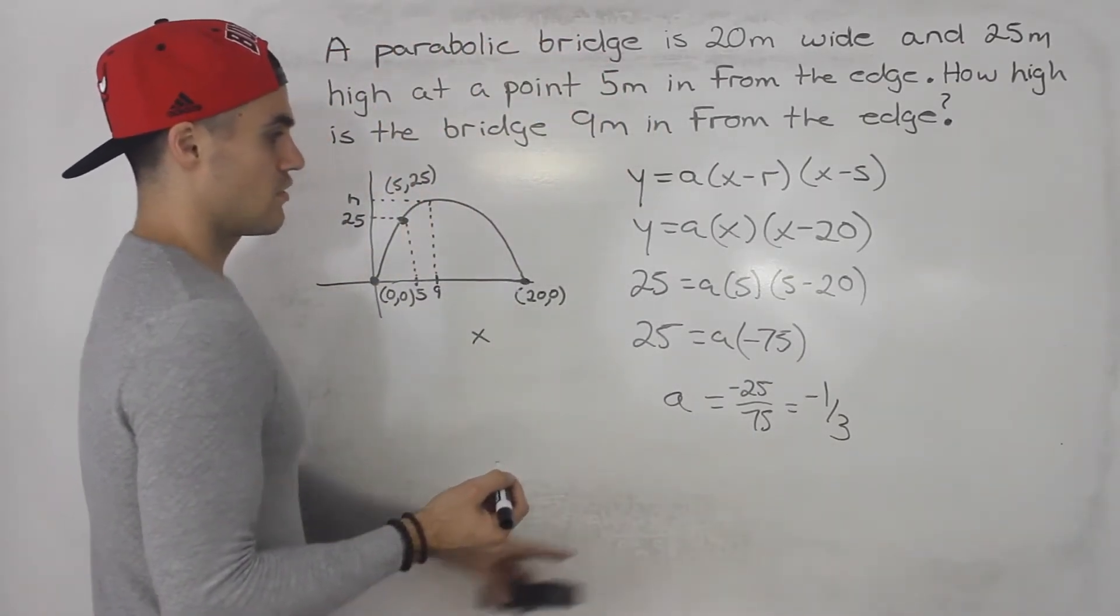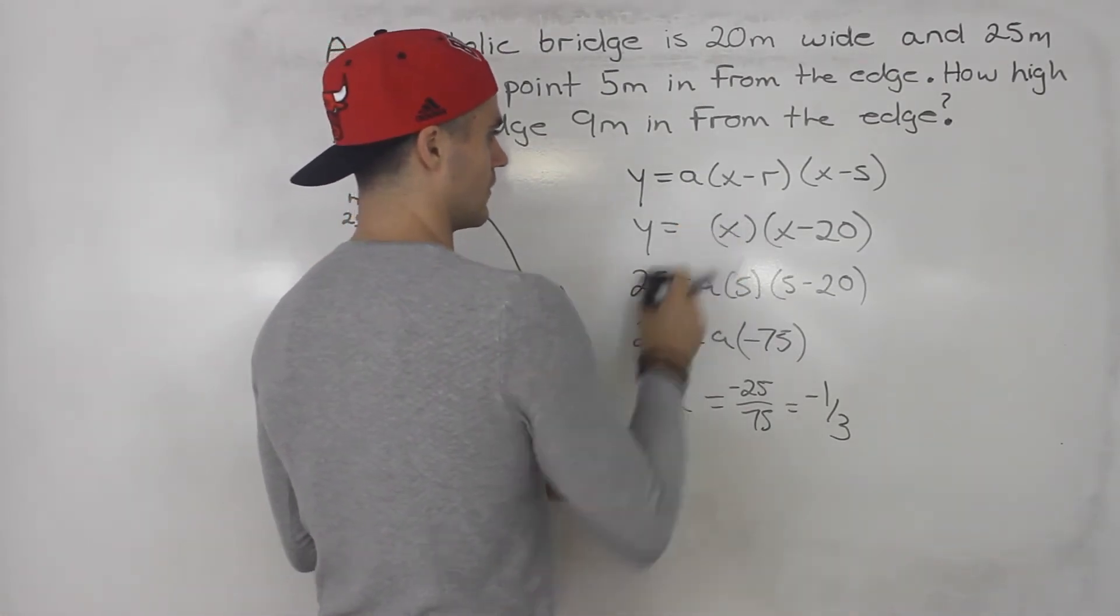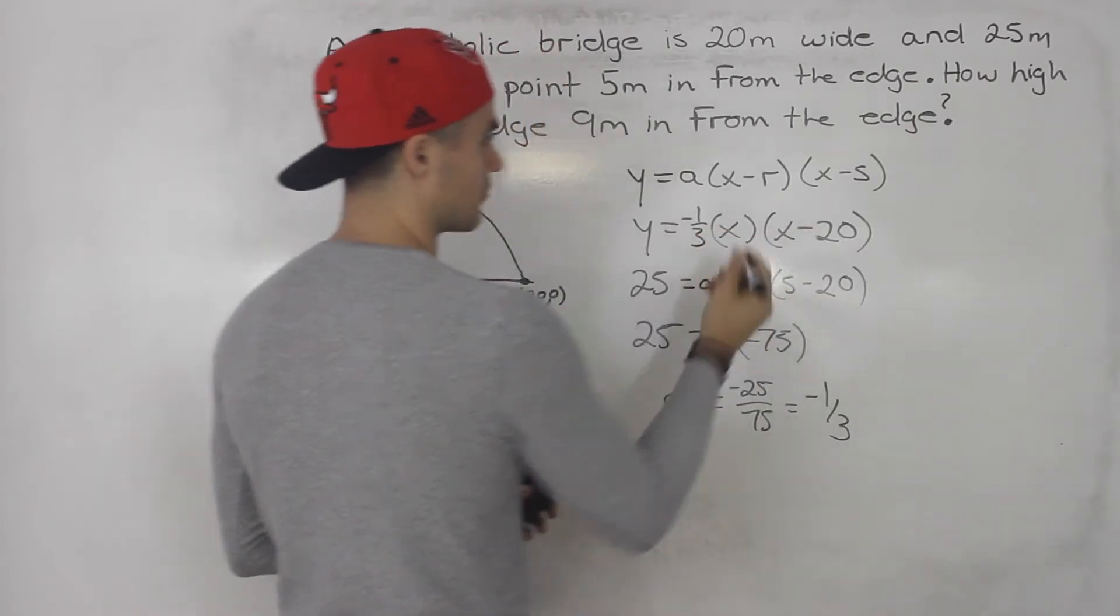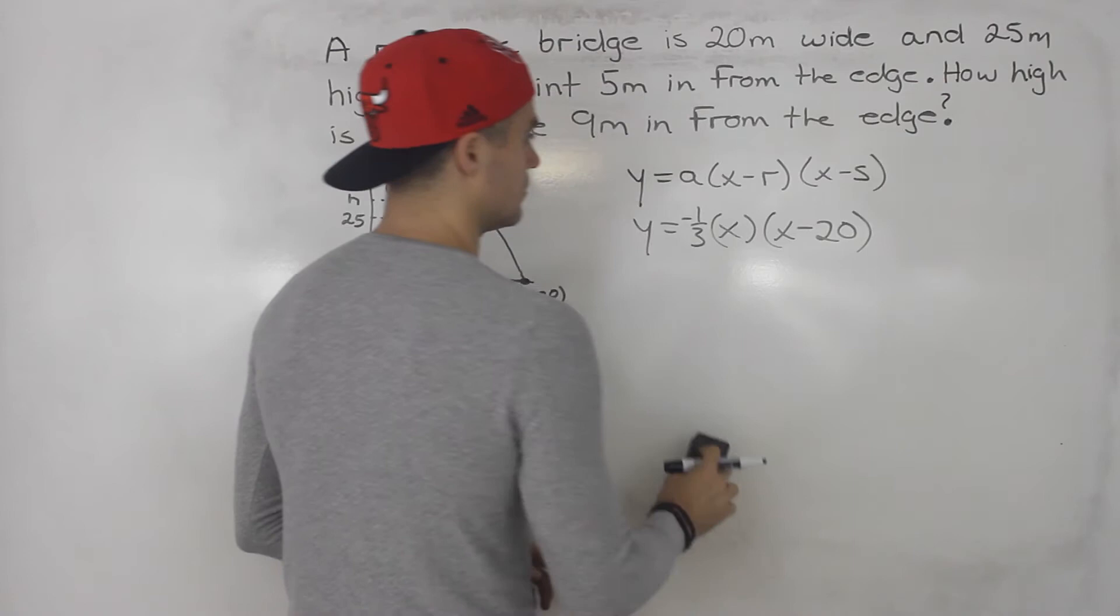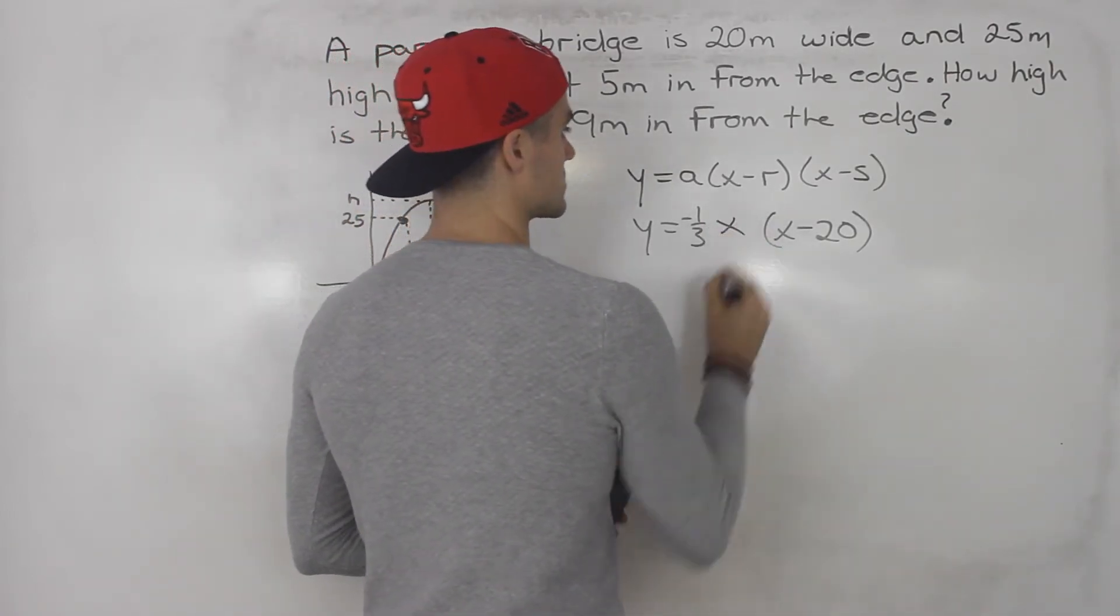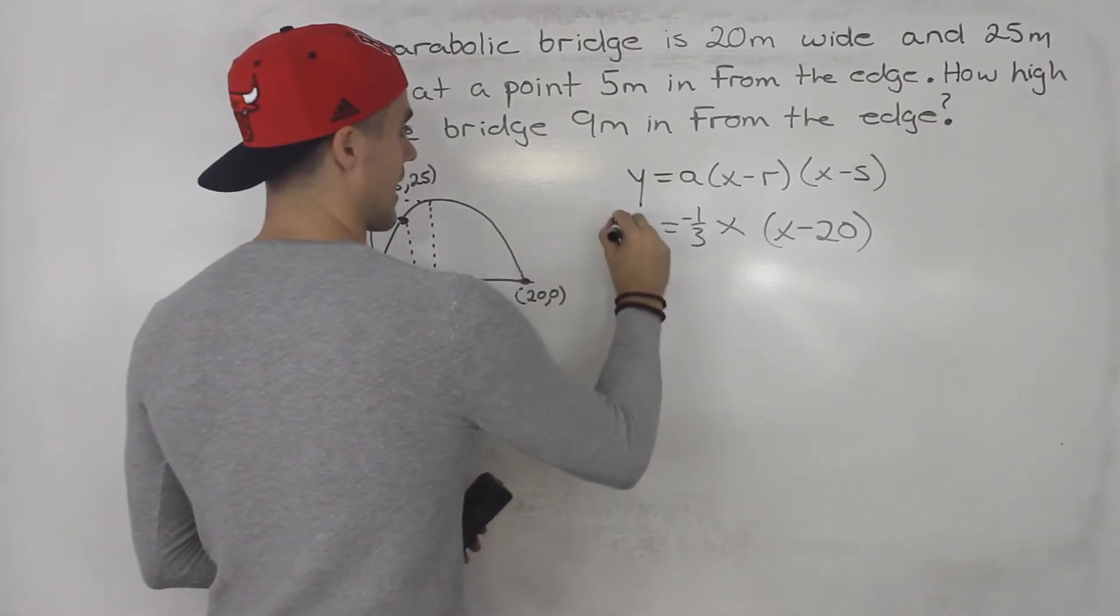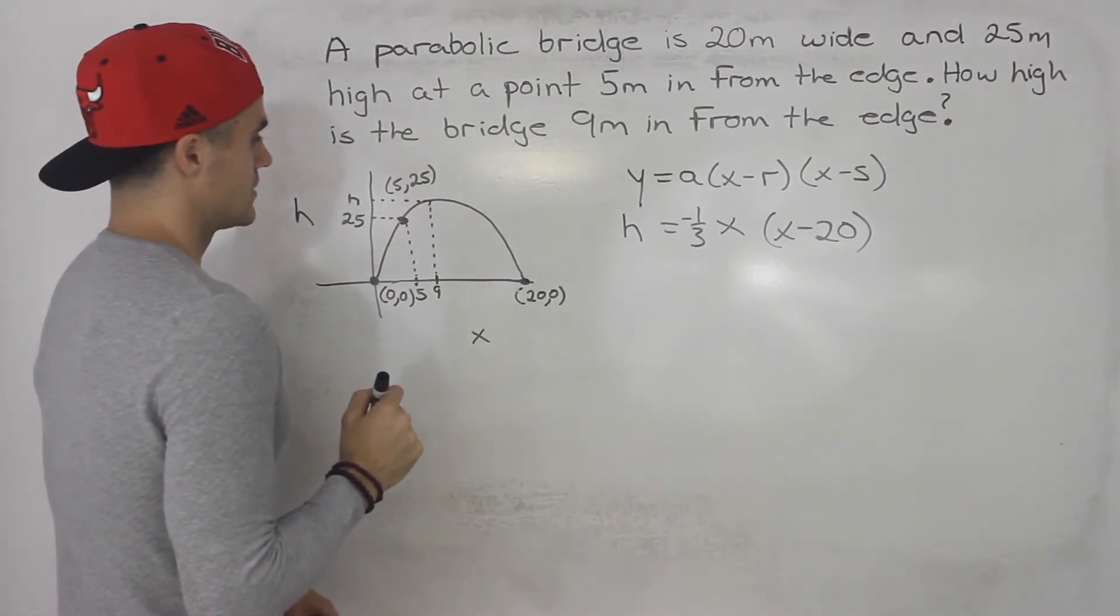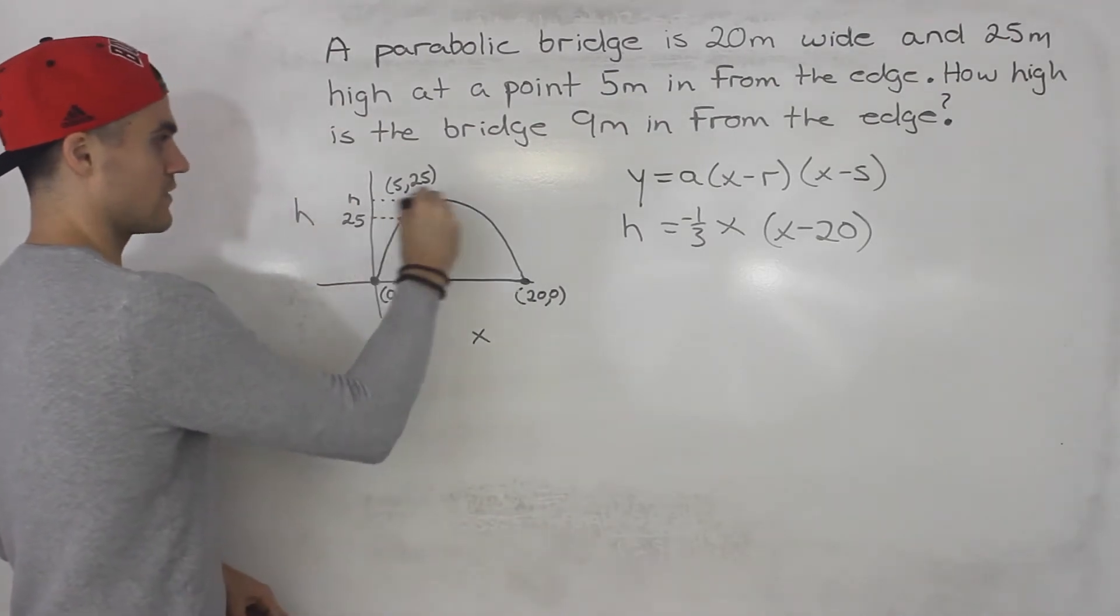So this a value we would plug in here. So we'd have negative 1 over 3 x bracket x minus 20. So you don't actually have to put this in brackets here. You could just put an x, make it look nicer. And I put a y here. Technically this should be an h, right? We're modeling the height. So we have an equation for this parabola now.